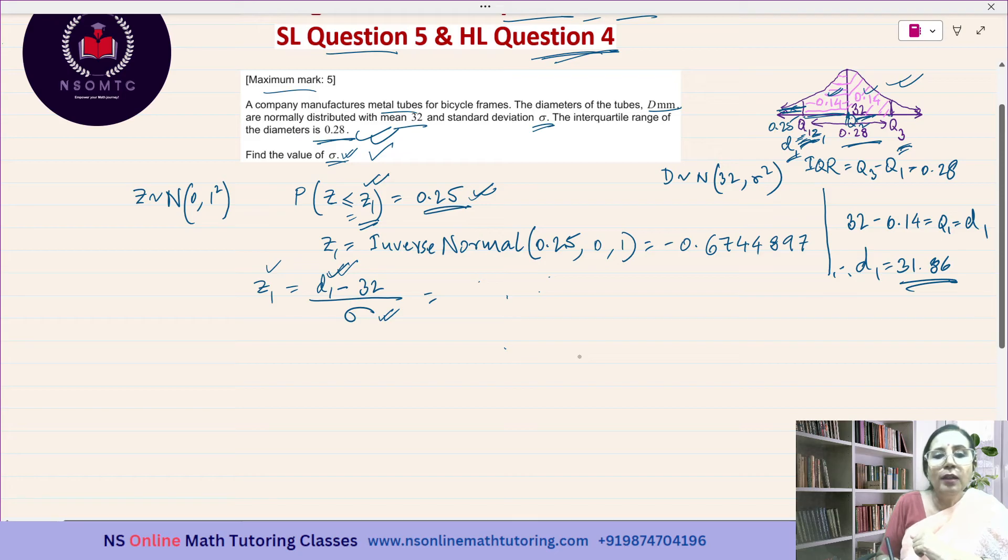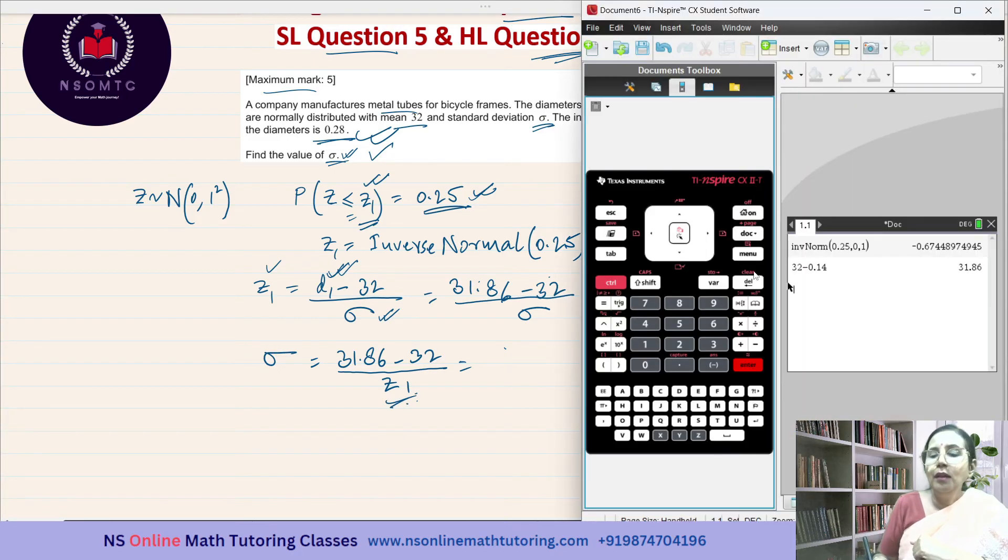I can substitute this value: 31.86 minus 32 over sigma equals z1. So sigma will be equal to 31.86 minus 32 over z1. Let us get the value of sigma. I'm not writing the entire long number, that's why I'm writing z1.